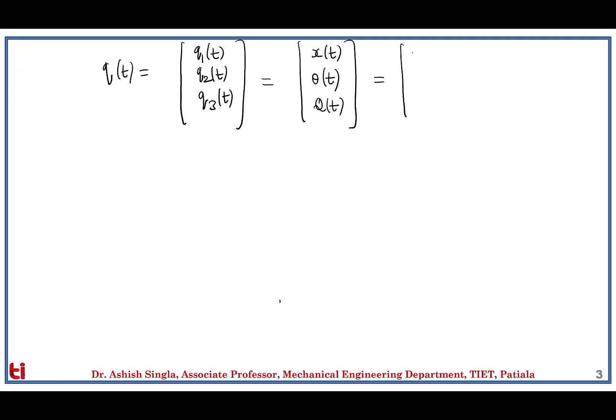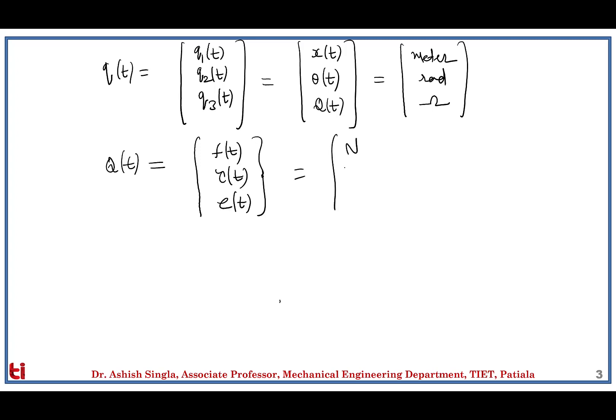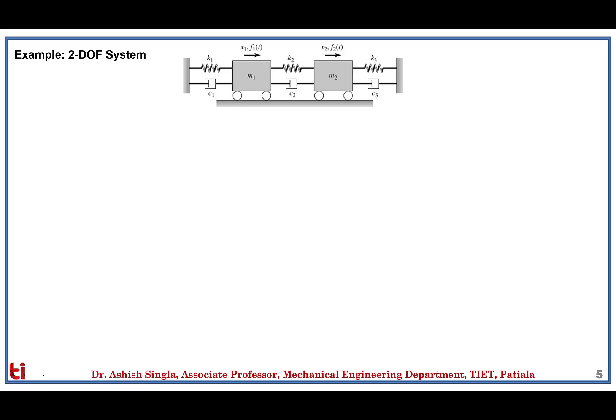Similarly, the generalized force vector Q_i can include force (in Newtons), torque (in Newton-meters), or EMF (in Volts), depending on the domain. Now let's apply the Euler-Lagrange approach to an example — the same two-DOF system used in the last session — to verify that both Newton-Euler and Euler-Lagrange approaches yield the same equations of motion. The system has masses m1 and m2 interconnected by three springs k1, k2, k3 and three dampers c1, c2, c3.